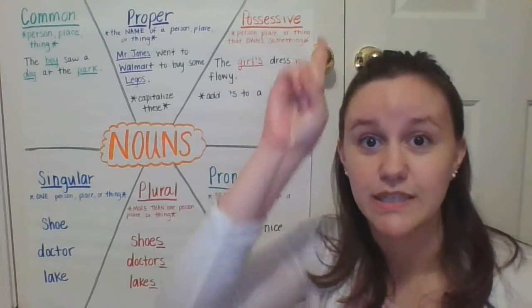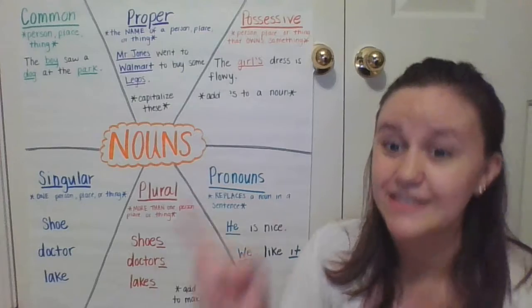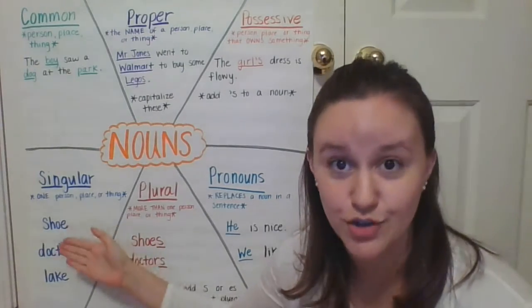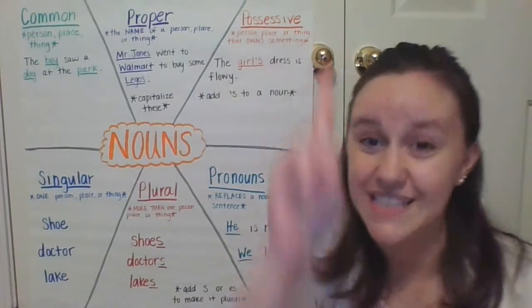Singular nouns. Singular means one. There's only one of them. One person, one place, or one thing. Like a shoe, a doctor, or a lake. There's only one of them. Singular.